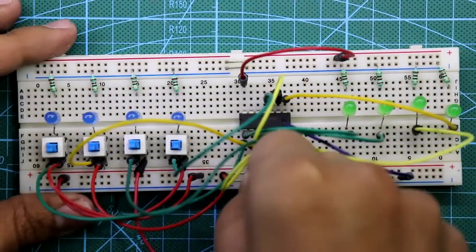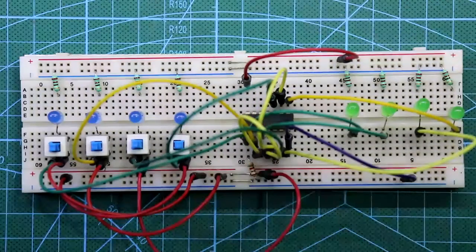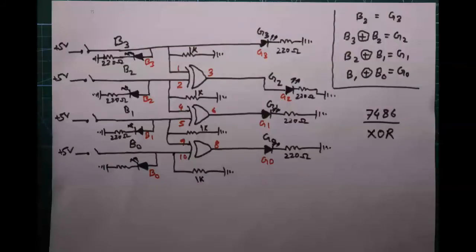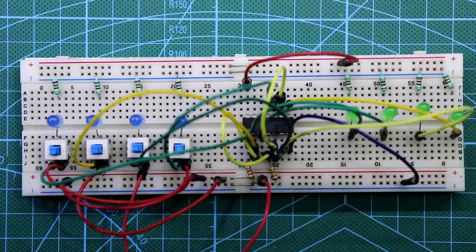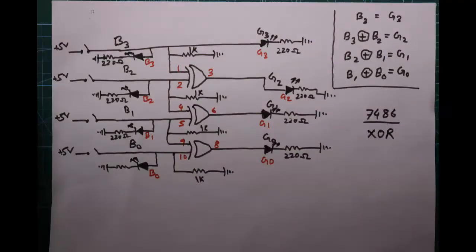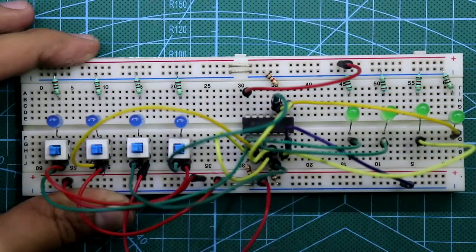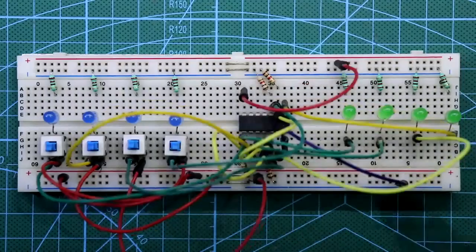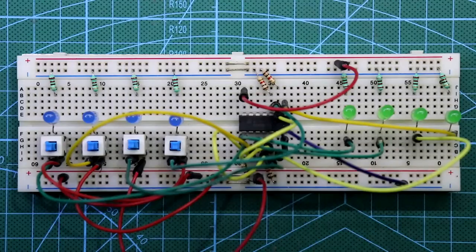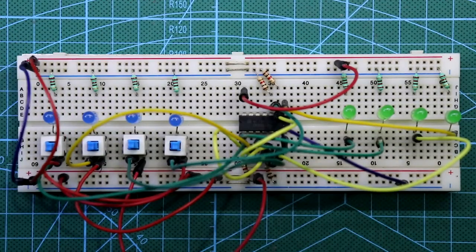Now put all the pull-down resistors. Connect one pull-down resistor to pin 1, another to pin 4, another to pin 9, and one more to pin 10. Our circuit connection is done. Now connect both the positive rails and both the negative rails, then connect the power supply — negative and positive.